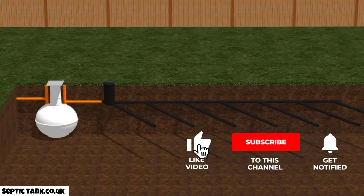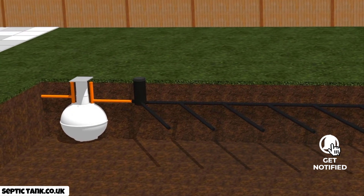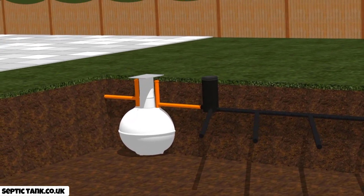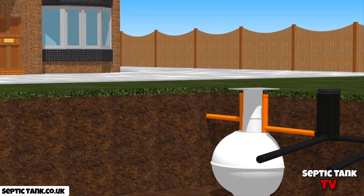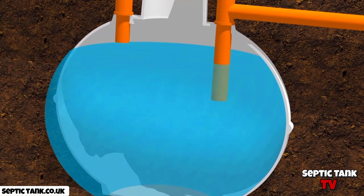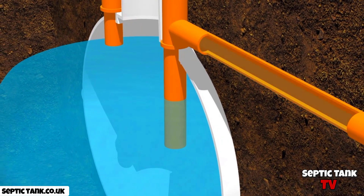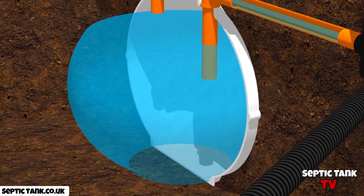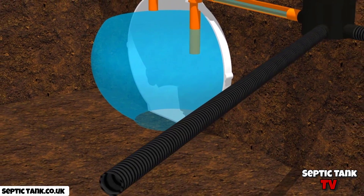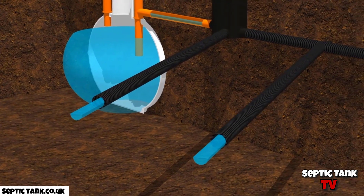A septic tank is a large holding tank buried underground and is connected to a soak away. Houses that are not connected to a main sewer connection are generally connected to a septic tank. Wastewater from the property enters the septic tank, and once it fills up, this wastewater makes its way into an outlet pipe and from there enters the soak away.